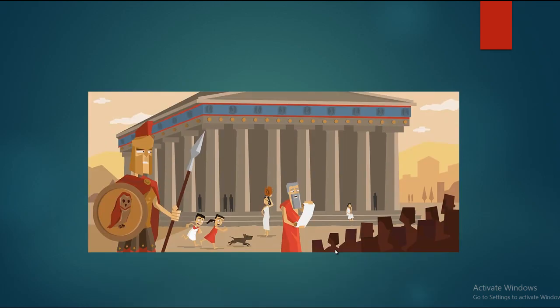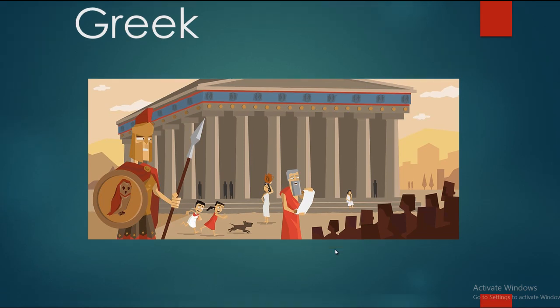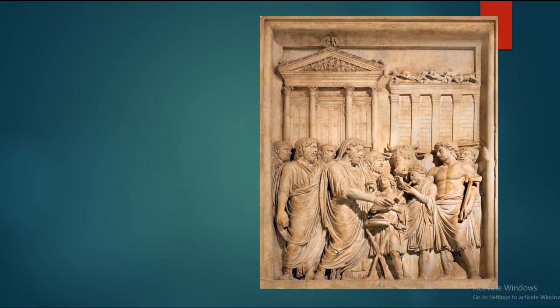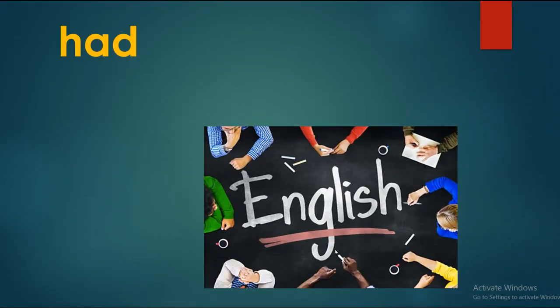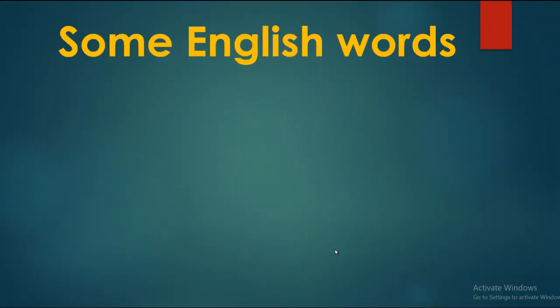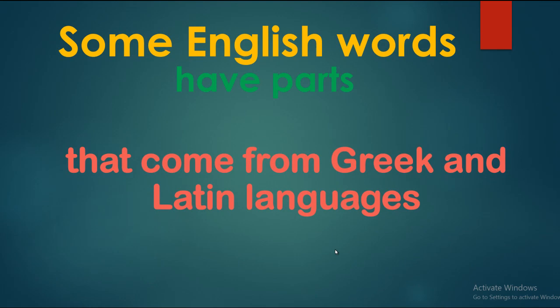There is a language that is called the Greek language and another language that is called the Latin language. Both languages did something good. They had a great effect on English. This is something that nobody can deny. Some English words have parts that come from Greek and Latin languages, and that's why it's important for some scientists and linguists to study both of them.